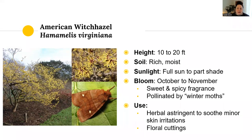Witch hazel is another choice — a shrubby small tree that only gets 10 to 20 feet high. It likes rich, moist soil, so you'll want it right next to the stream. What's really cool about witch hazel is that it blooms in the fall from October to November with a sweet and spicy fragrance, and it's pollinated by what we call winter moths — a specialist type of moth that focuses on the only flowers available in October and November. It adds cool fall color to your buffer and has herbal uses; you might have seen witch hazel astringent in drug stores to soothe minor skin irritations. The late-season flowers can also be used for floral cuttings.